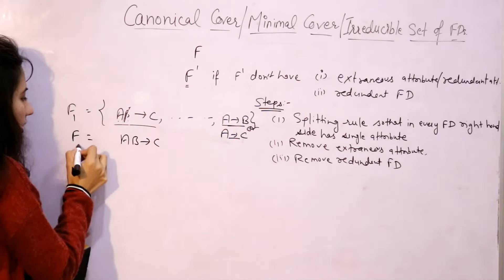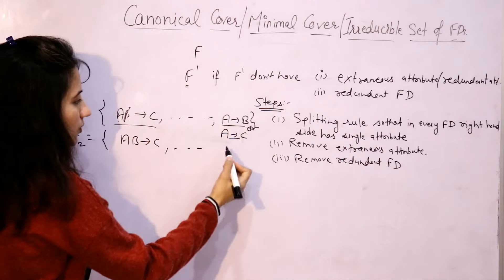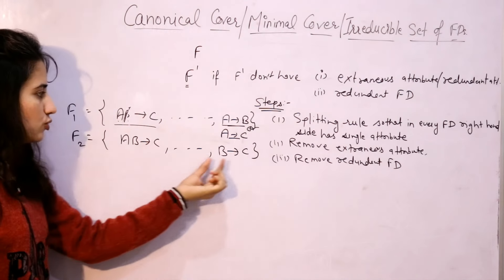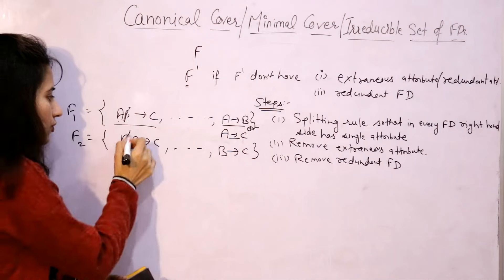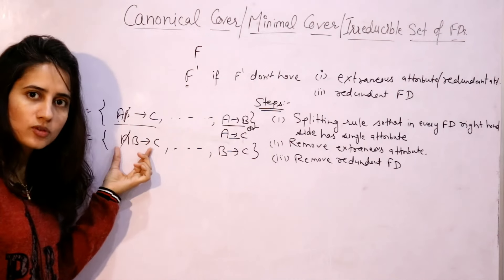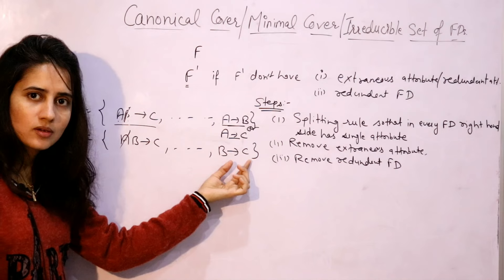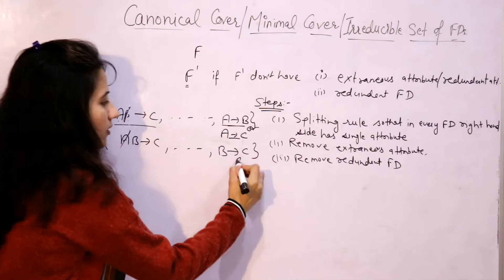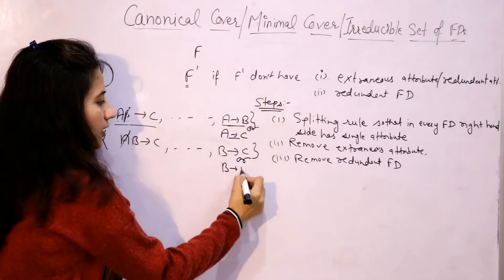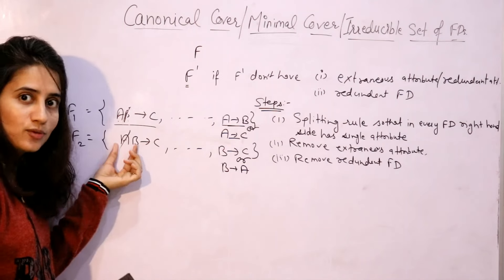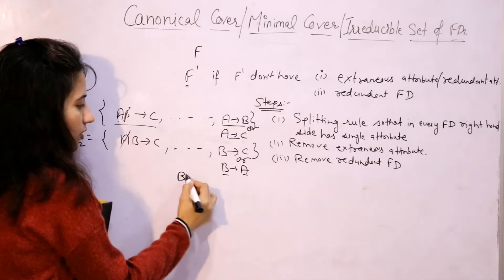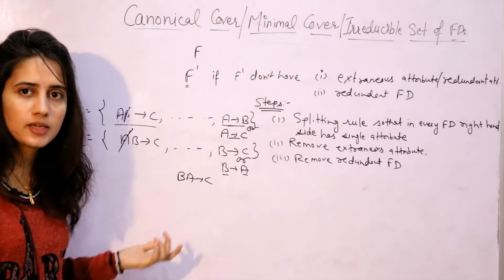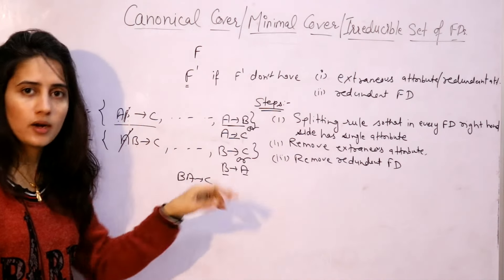In a second case, if B → C is given alone, then A is the extra attribute in AB → C, because alone B can drive C — so what's the use of A? Or if B → A is given, A is extra because using B you can derive A, and then using AB you can derive C. So you can eliminate A from AB → C. This is how we remove extraneous attributes.